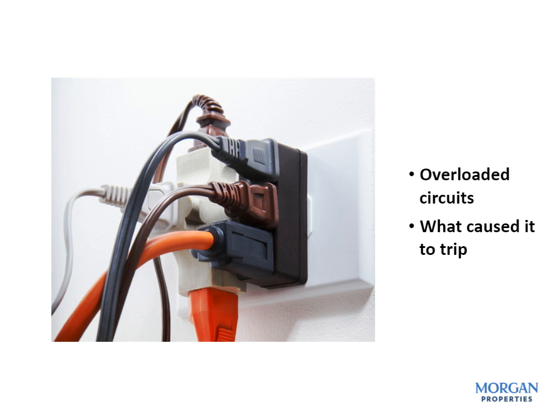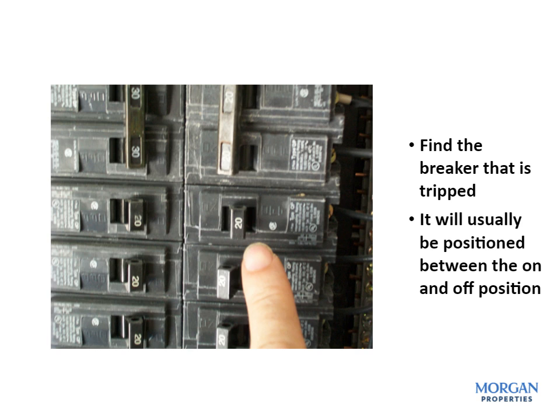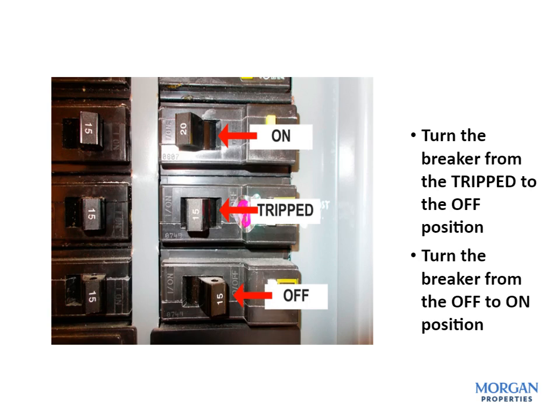Remove some of the appliances off the circuit. Find the breaker that is tripped — it will usually be positioned between the on and off position. Turn the breaker from the tripped to the off position. Then turn the breaker from the off to the on position.